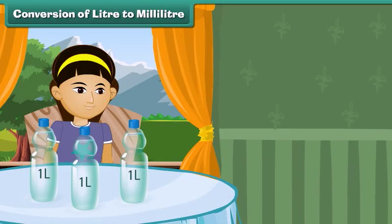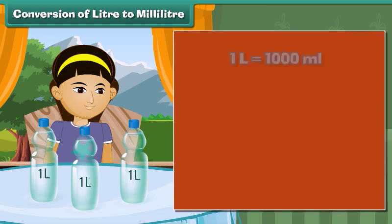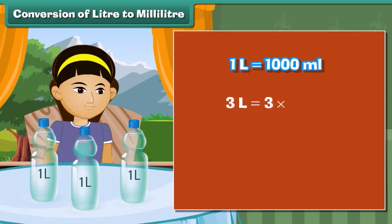Conversion of liters to milliliters. Sonam drinks 3 liters of water in a day. What is Sonam's water intake in milliliters? 1 liter is equal to 1000 milliliters. 3 liters is equal to 3 into 1000 milliliters, which equals 3000 milliliters. Therefore, Sonam drinks 3000 milliliters of water in a day.